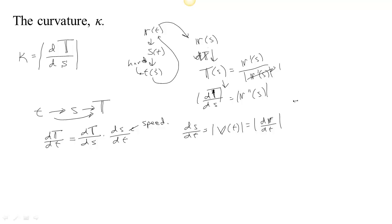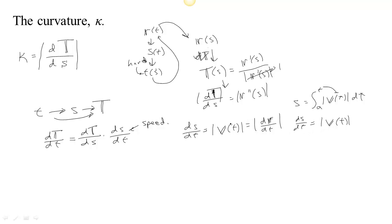In fact, you can see this from the definition of s. s is the integral from some starting time up to t of speed as a function of τ dτ. By the fundamental theorem of calculus, if you take the derivative of both sides with respect to t, the variable just comes down and we get that ds/dt equals the speed. So if we want to find ds/dt, it's easy — it's just the speed.